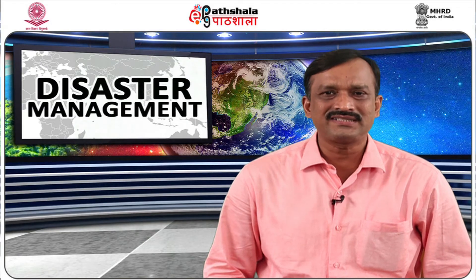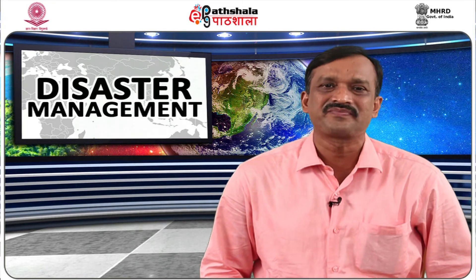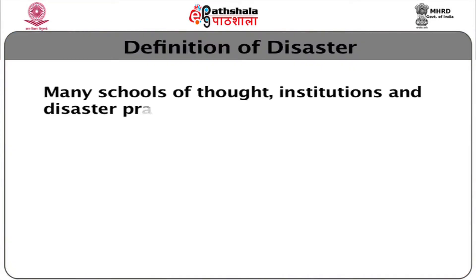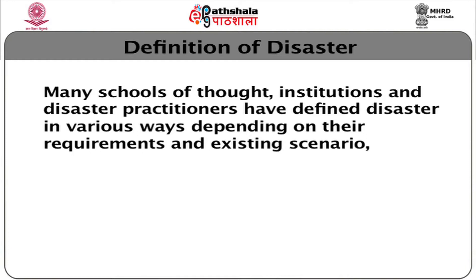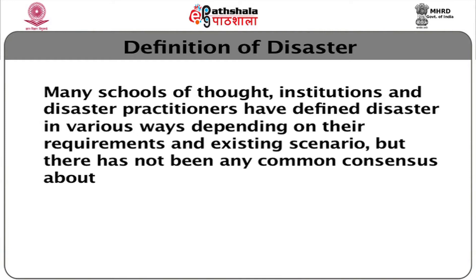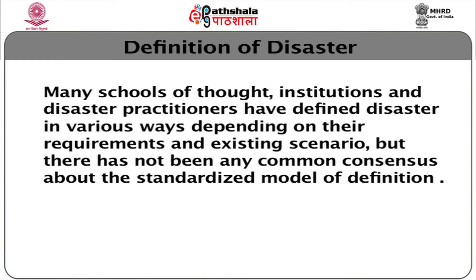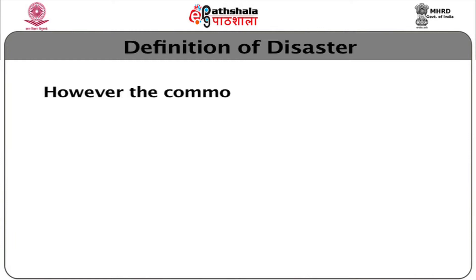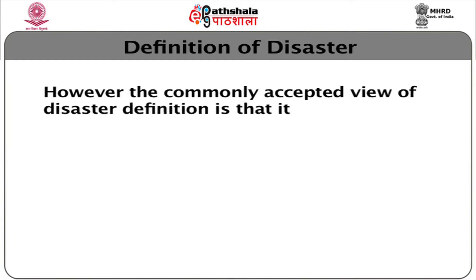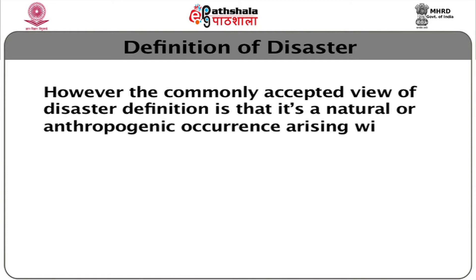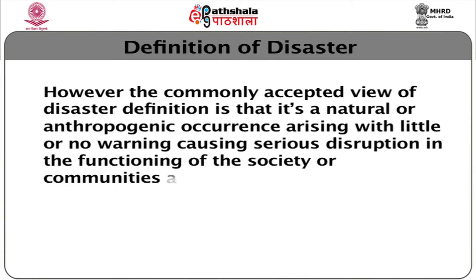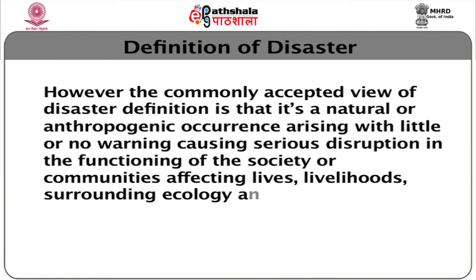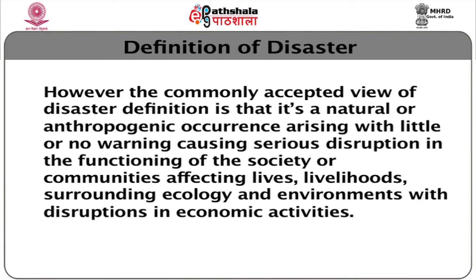Now, the question arises as to what should be the correct definition of disaster. Many schools of thought, institutions and disaster practitioners have defined disaster in various ways depending on their requirements and existing scenario. But there has not been any common consensus about a standardized model of definition. However, the commonly accepted view is that disaster is a natural or anthropogenic occurrence arising with little or no warning, causing serious disruption in the functioning of the society or communities, affecting lives, livelihoods, surrounding ecology and environments with disruptions in economic activities.